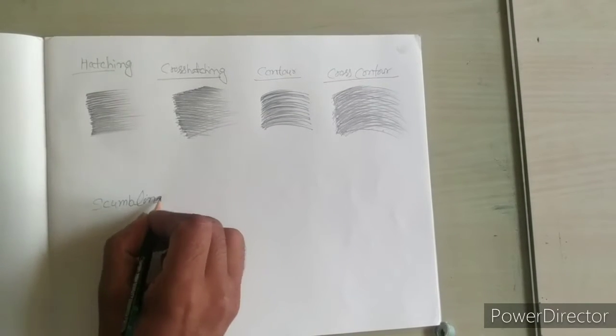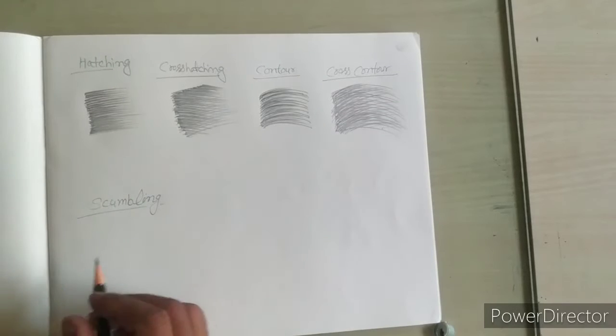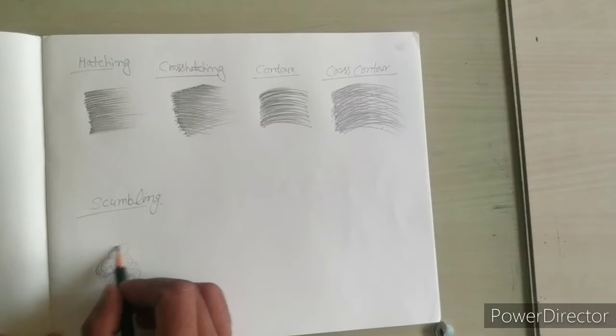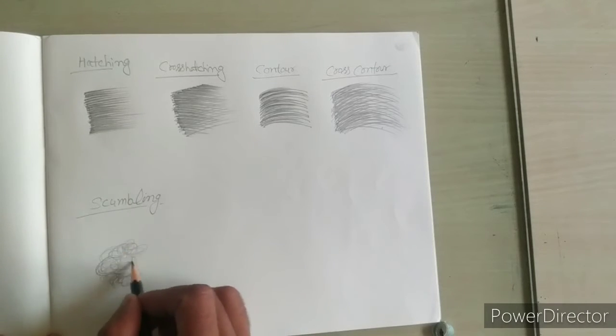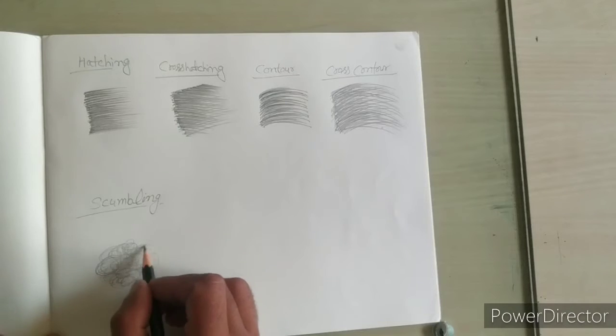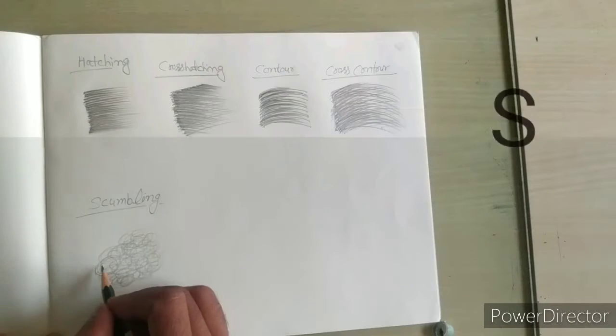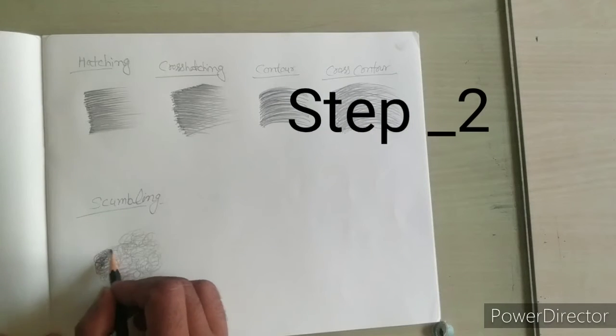Scumbling technique: firstly draw small circles like this. There are minimum five steps to draw scumbling that are added to darker the value becomes. Repeat same procedure in this technique.